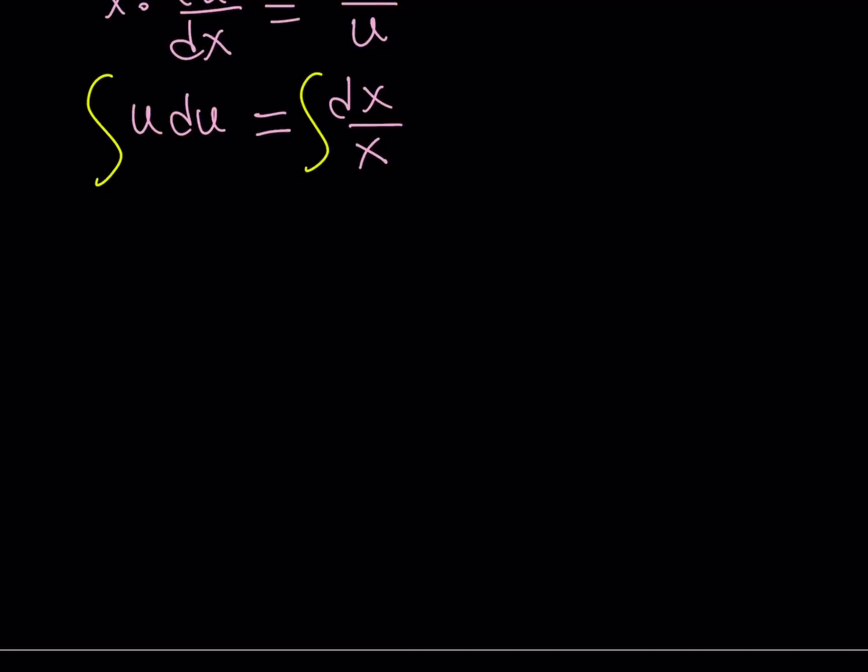Now, since we have to use a constant, this is an indefinite integral, I would like to use a constant on one side only because the difference of two constants is also just another constant. So we don't really have to use constants all over the place. So I can basically write this as u²/2, which is the power rule, by the way. That's one of the first things you learn if you're doing integrals.